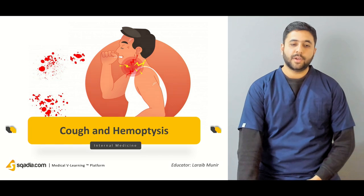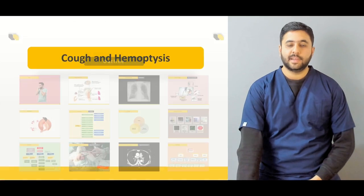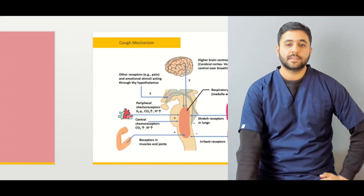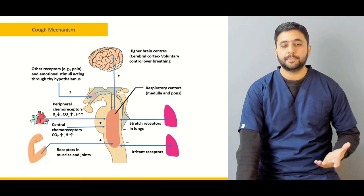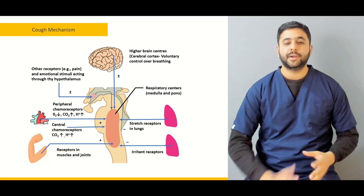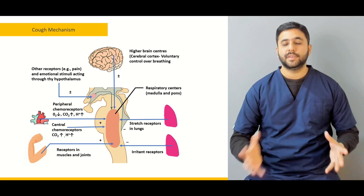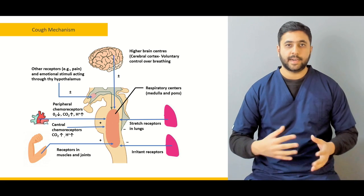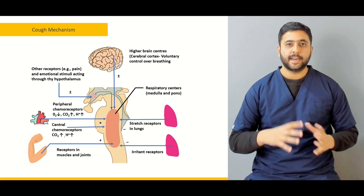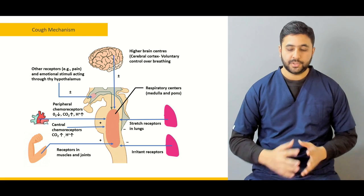Let us look at how we are going to proceed with our lecture. We are going to start off by talking about the physiology of the cough, what are the major players, what are the afferent nerve fibers, what is the brain area that has the cough center and how it interacts along with the other centers residing close by to maintain overall homeostasis in the patient.